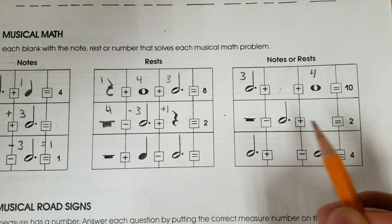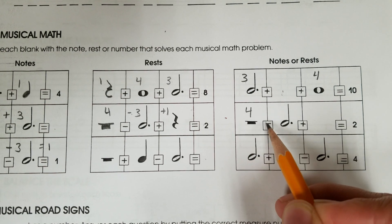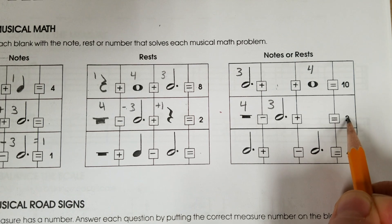In the next problem, a whole rest is 4. 4 minus dotted half note is 3, plus what, equals 2.